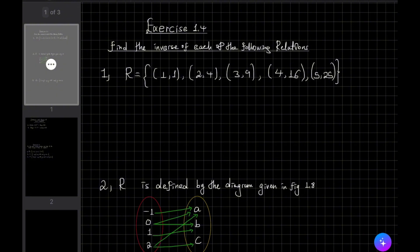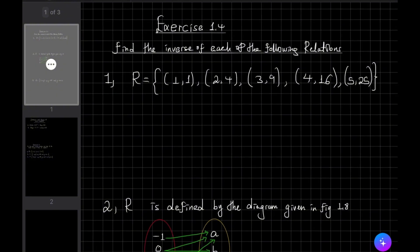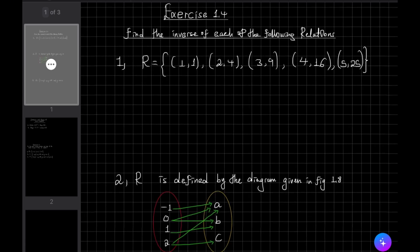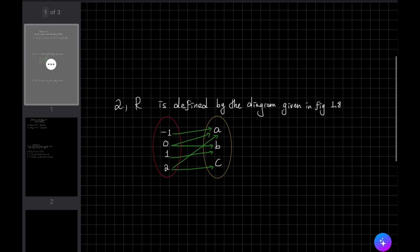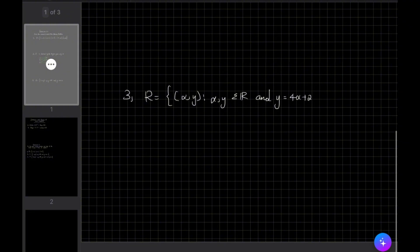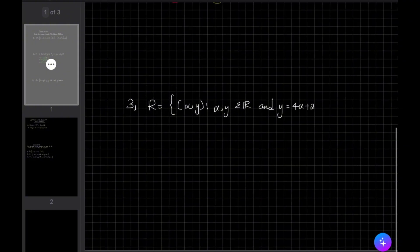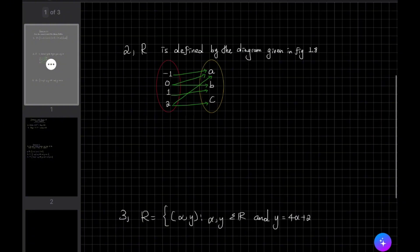Exercise 1.4: Find the inverse of the following relations. Number one: set of ordered pairs. Number two: diagram. Number three: equation or set builder method.